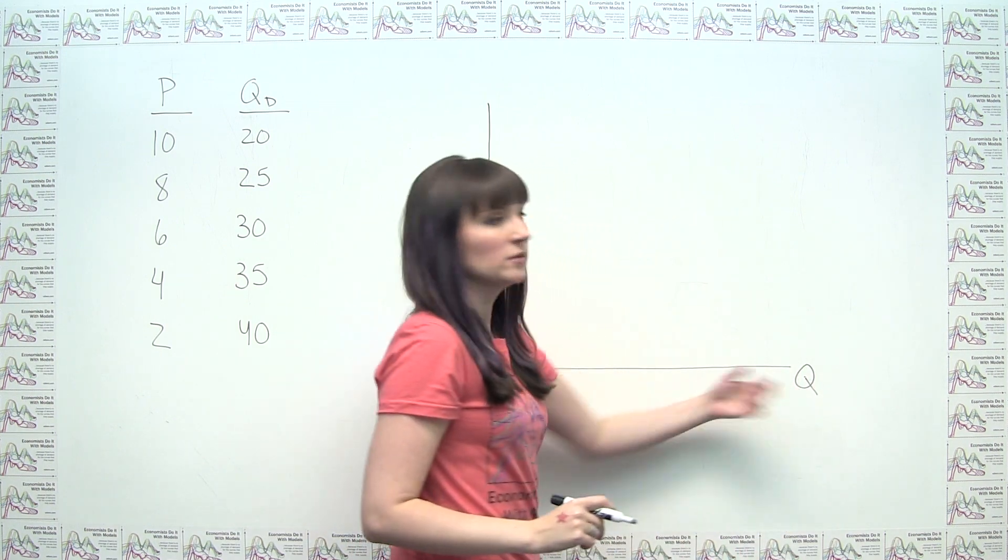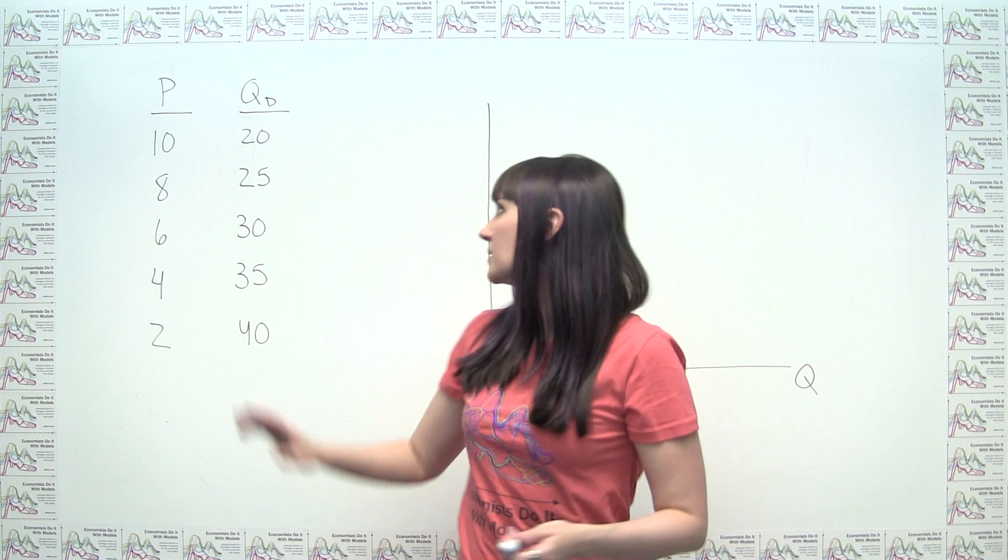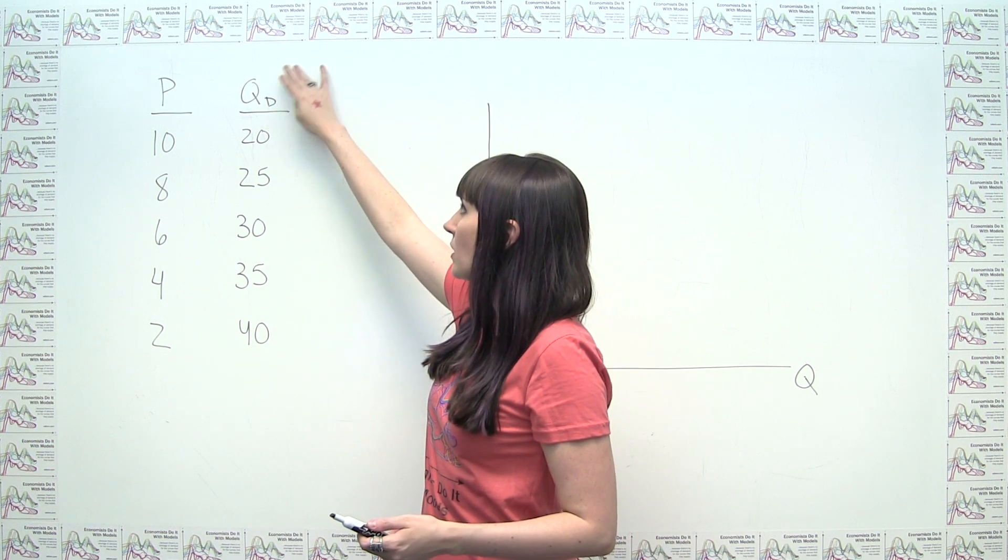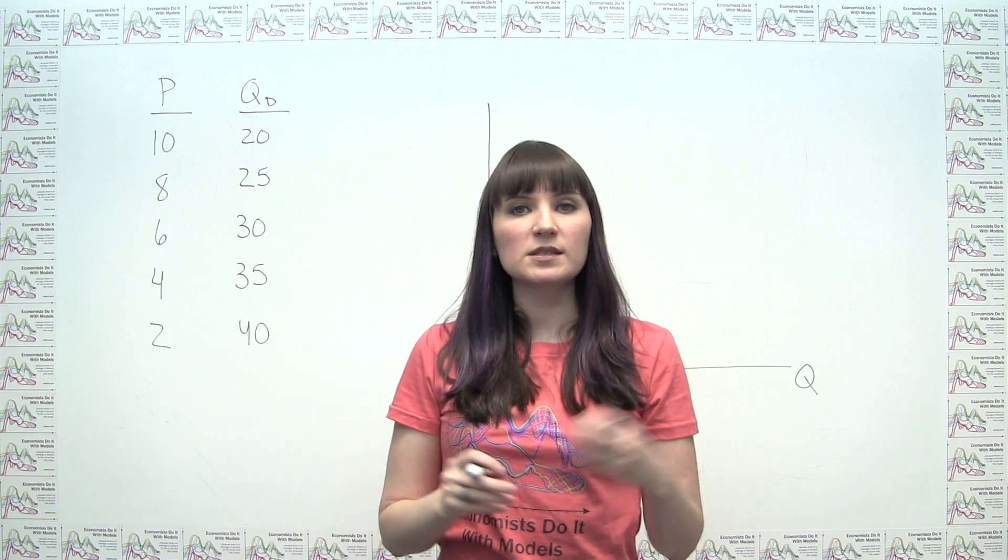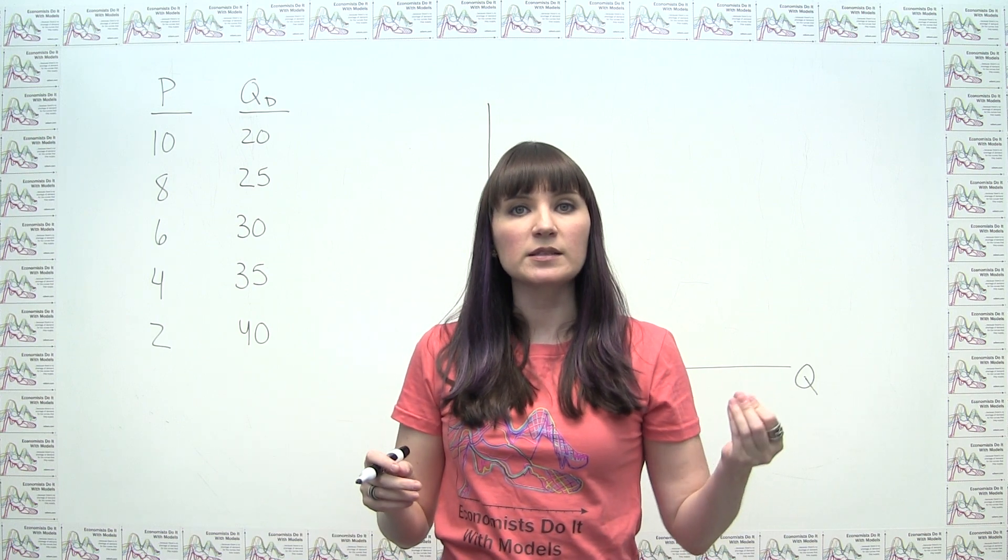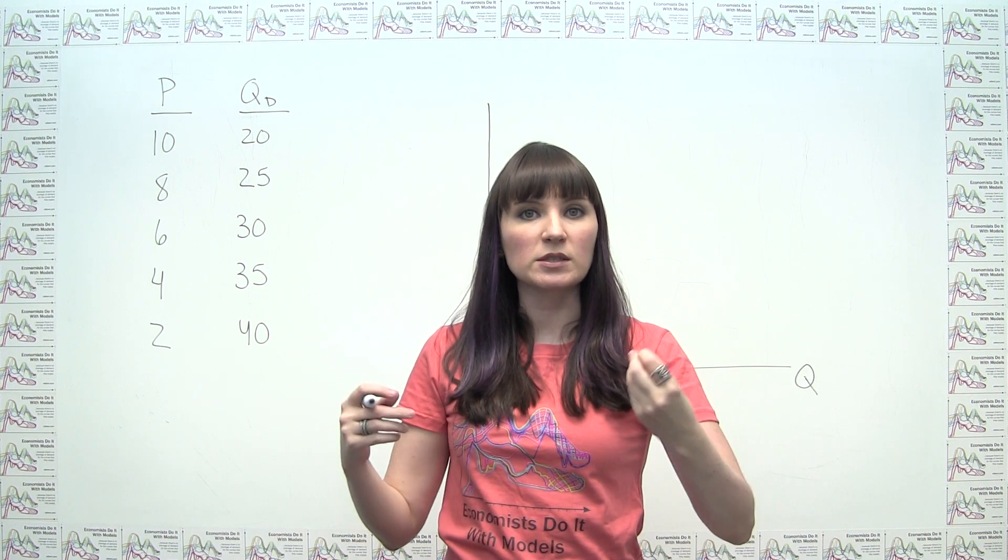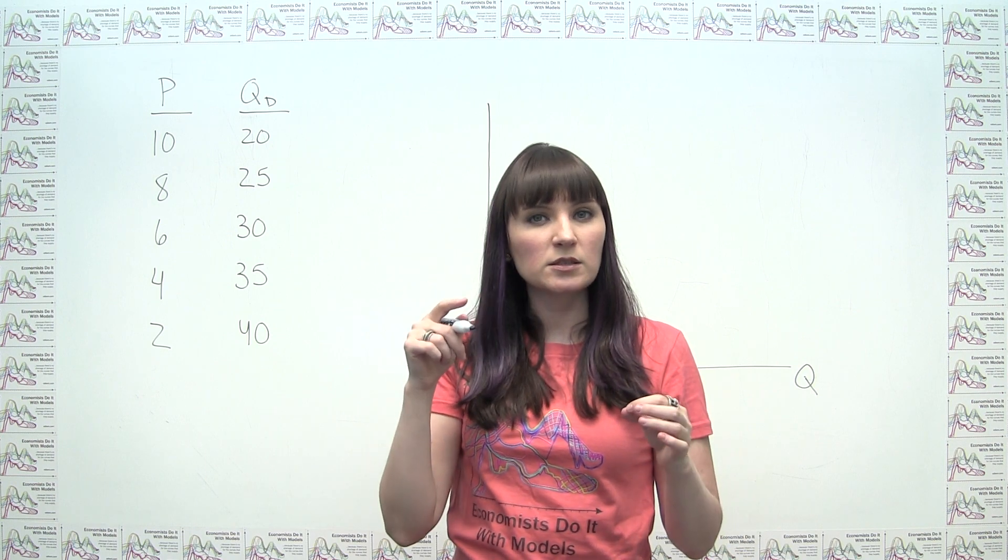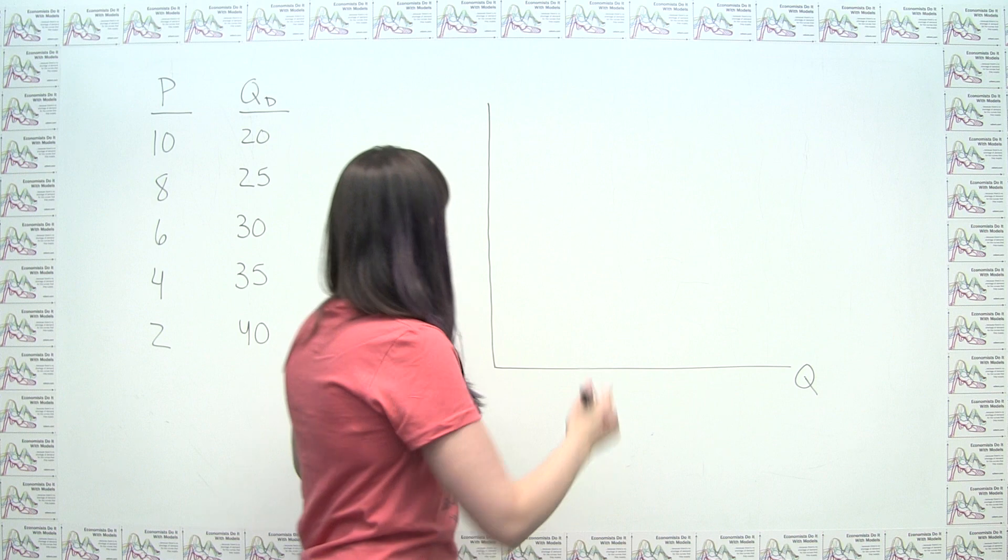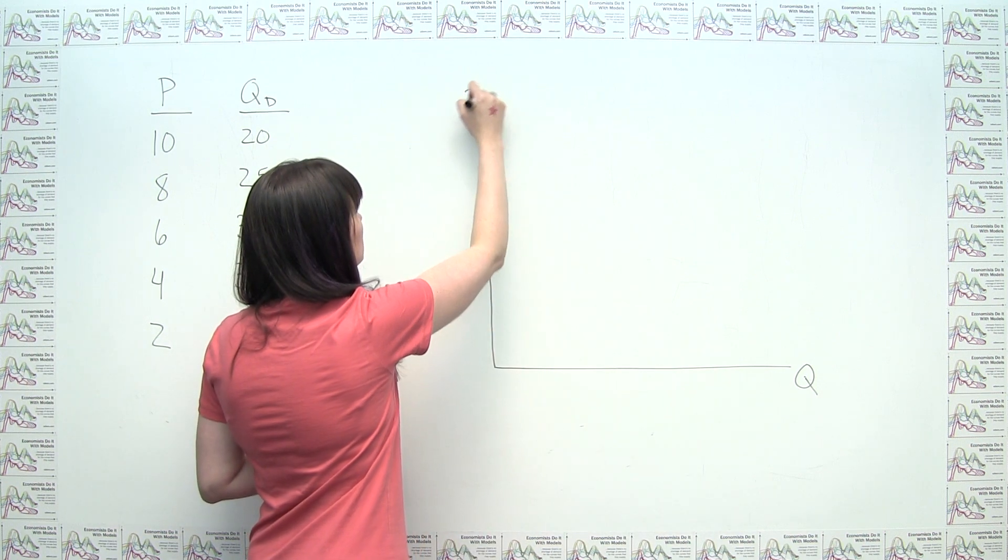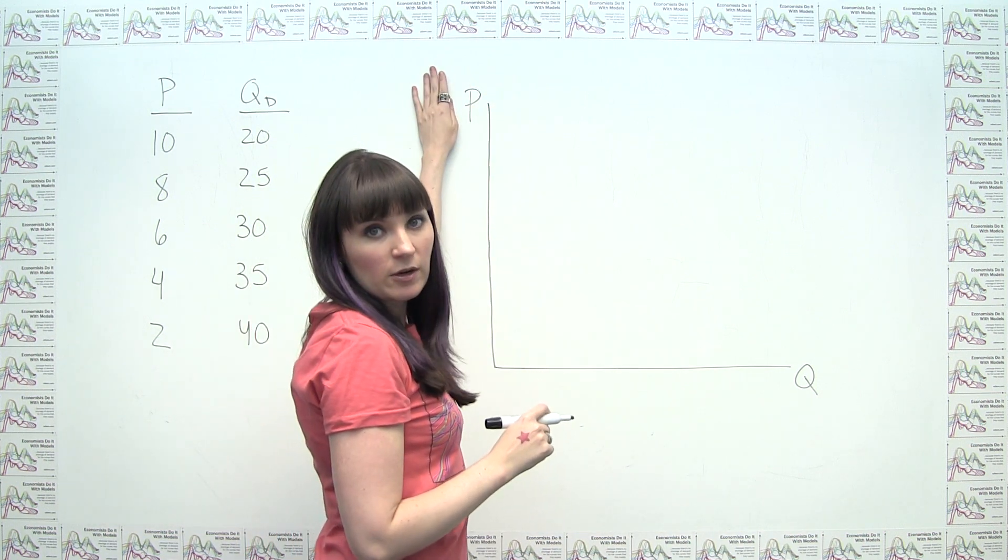So we can put a Q here. I put a capital Q because it seems like we're talking about market quantity. Sometimes we will distinguish individual quantity demanded, demand by one person, and we'll put that as lowercase Q. Not everyone is good at that distinction. And we put price on the y-axis, the vertical axis here.